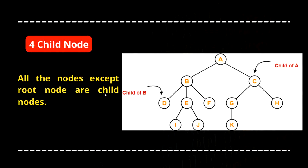Child node: all the nodes except the root node are called child nodes. A is the root node, so except A all the nodes are known as child nodes. A has two children B and C, so B and C are child nodes. D, E, F are children of B, so they are also child nodes. G and H have parent C, so they are also child nodes. I and J have parent E, so they are child nodes. K has parent G, so K is also a child node.